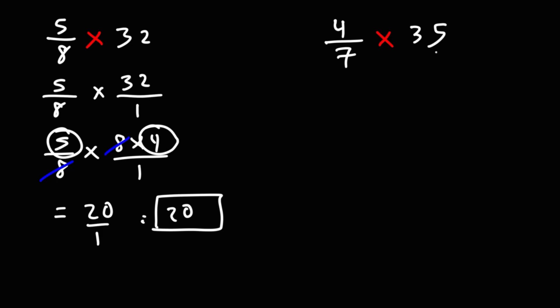Now for the second example, let's do the same thing. Let's put 35 over 1 and multiply across. Now 35, we can write that as 7 times 5. And note that we could cancel the 7. So we're left with 4 times 5, which is 20.